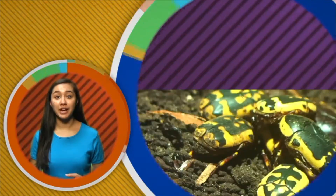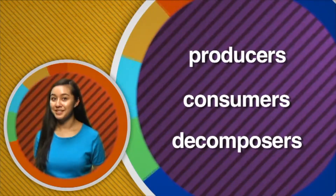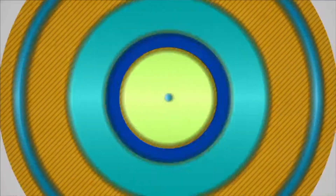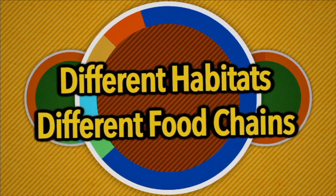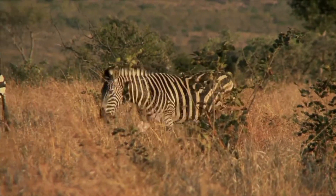Now you know the links of the food chain: producers, consumers, and decomposers. It's easy to see how all of nature is interconnected and related. Let's take a look at how the links all come together in different habitats to form food chains. A food chain shows the relationship between the plants and animals in different habitats. Every habitat has its own food chain.